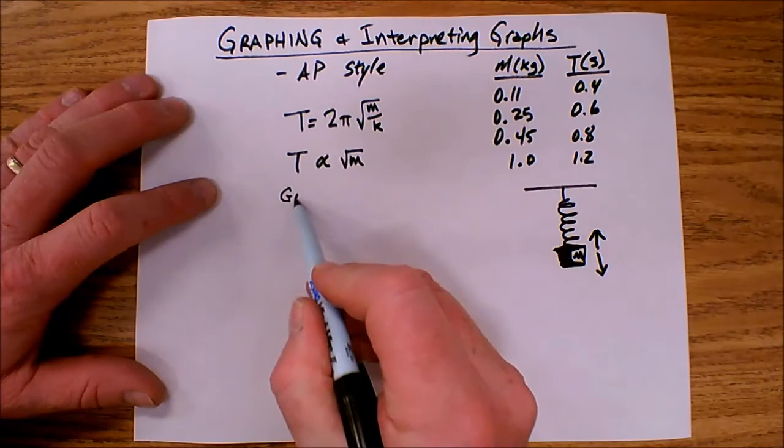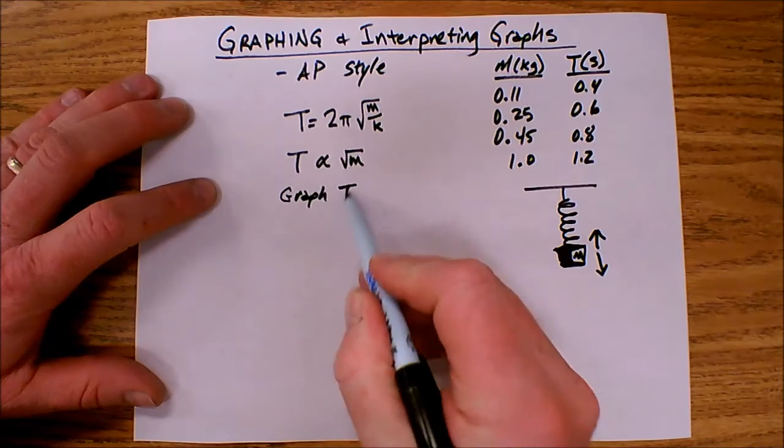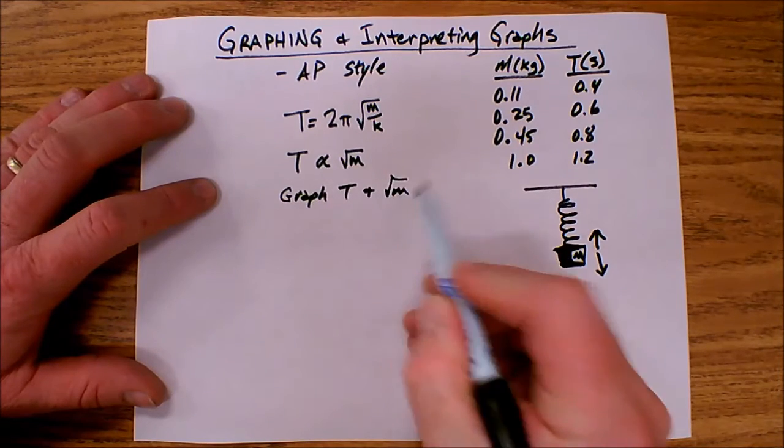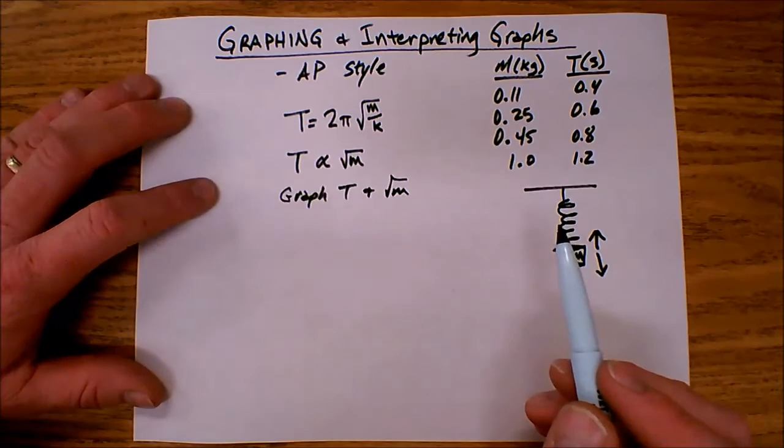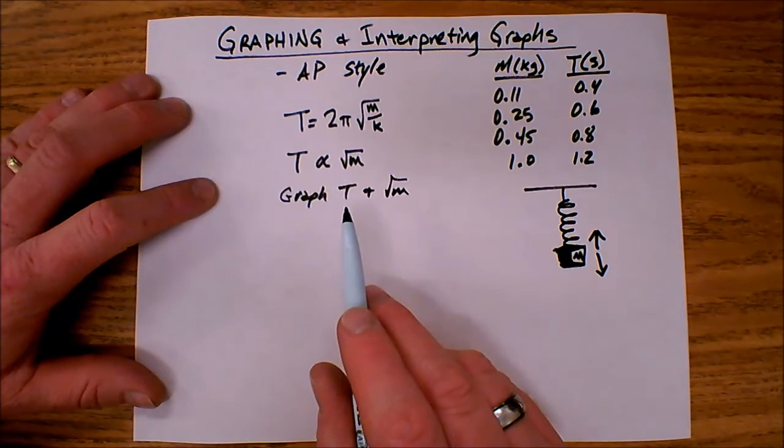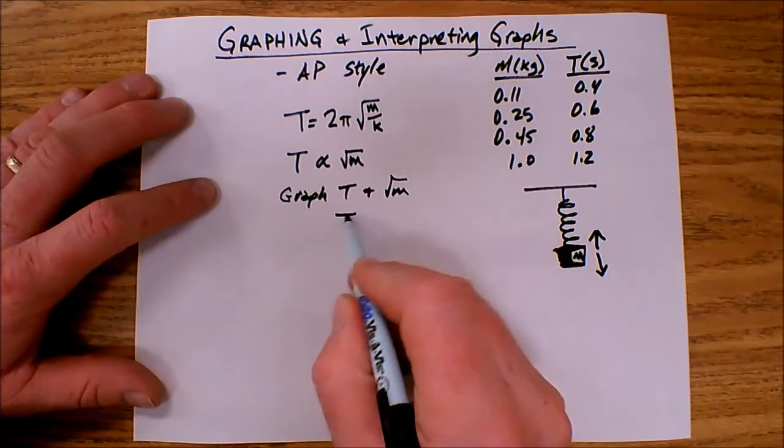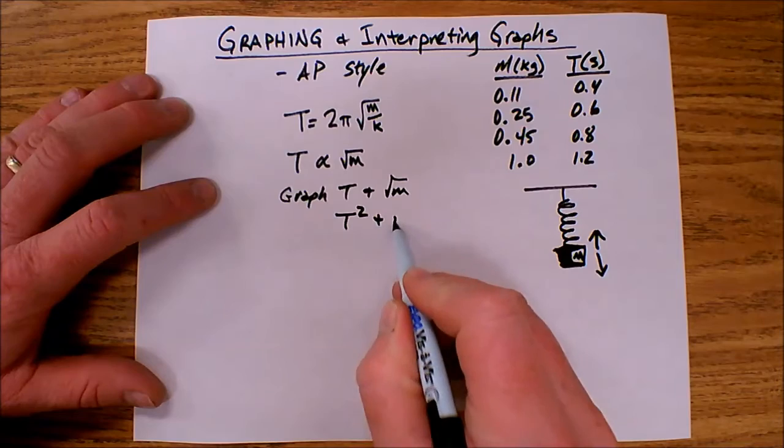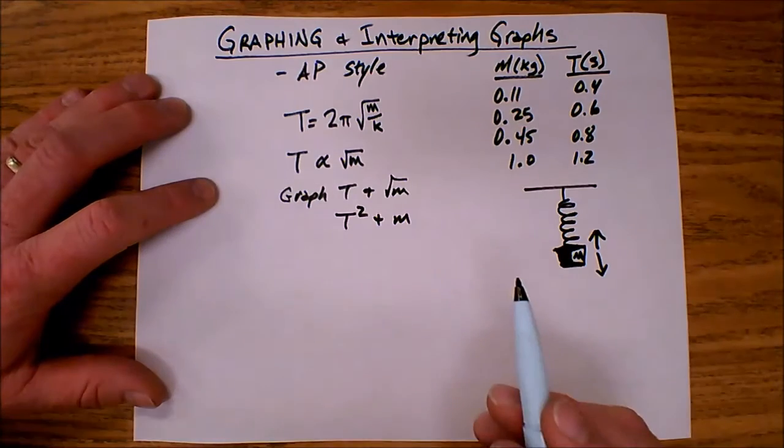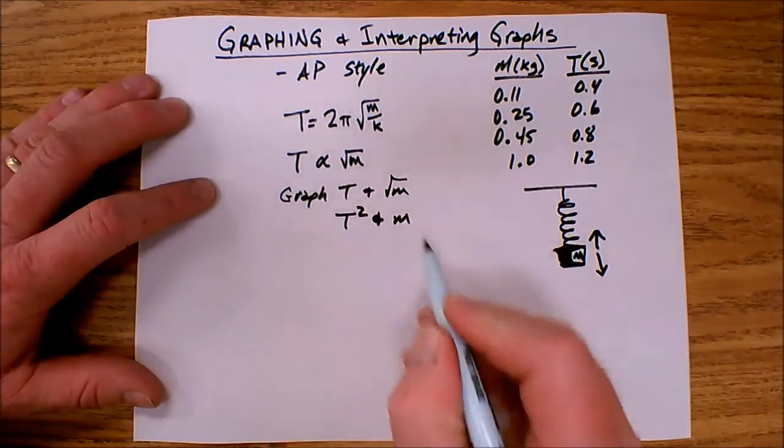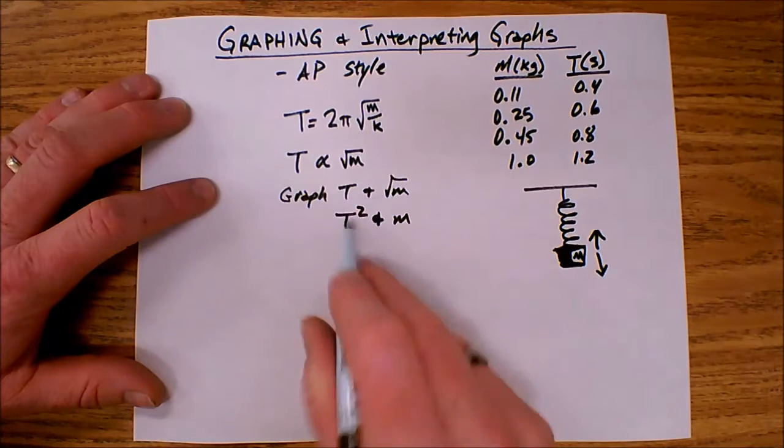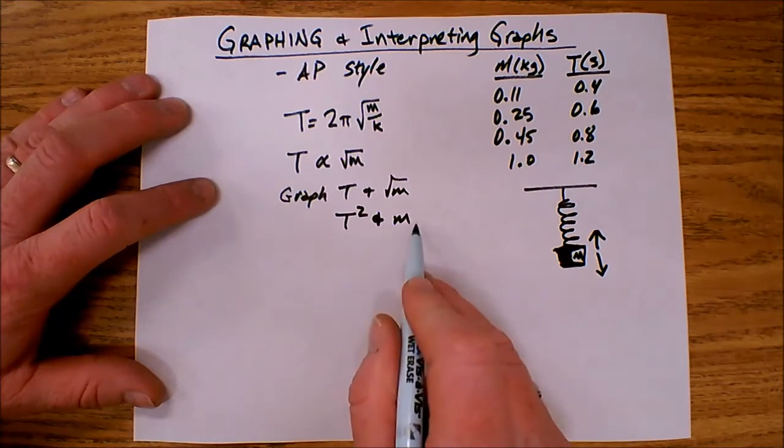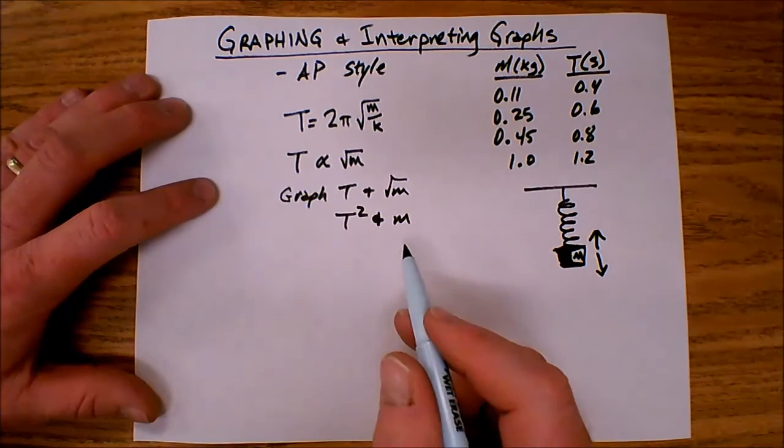So T is proportional to the square root of m. That means that I could graph T and the square root of m and that would give me a straight line. Another way to look at this is I could similarly graph T squared and m and that would give me a straight line as well because that's really the same thing. If I squared both sides, I would see that that's the same.